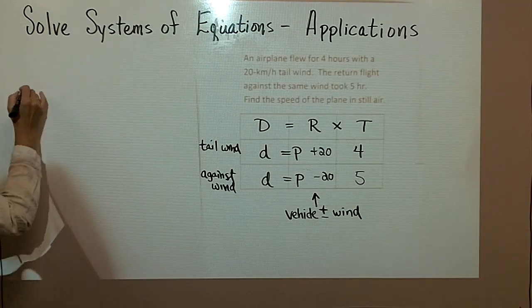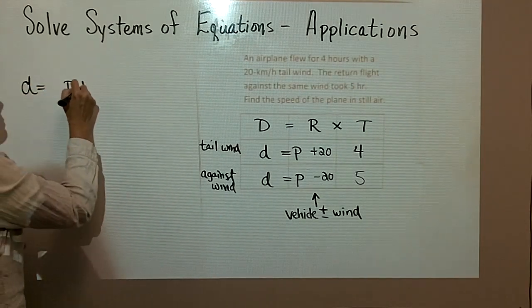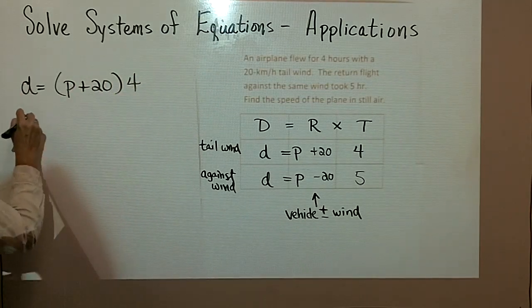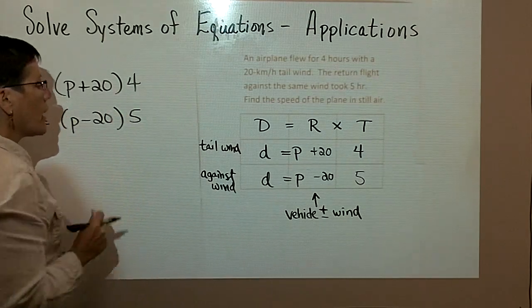d equals p plus 20 times 4. And the second equation is d equals p minus 20 times 5.